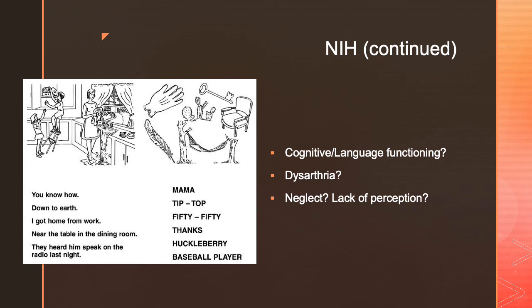Last but not least, we look for neglect — lack of perception. We check whether they're giving attention to both sides of their visual field or neglecting one side. Remember: neglect is not a visual problem, it's a perception problem. They're going to have trouble giving attention to one side of the world, and usually it's the left side they're neglecting. We assess whether they can distinguish things within their visual field and give attention to both sides.